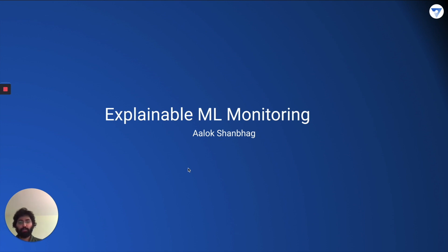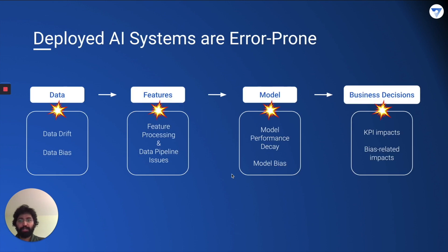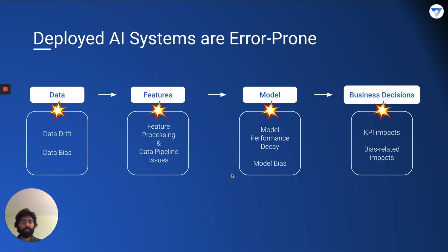Let's begin with why do we need it. Deployed AI systems are error prone. In a deployed AI system, you have a model deployed on some server. Data is obtained and processed in data engineering pipelines to convert it into features that the model finds acceptable. These features are fed into the model, which makes a prediction, and using some additional logic on top of that prediction, a business decision is made.